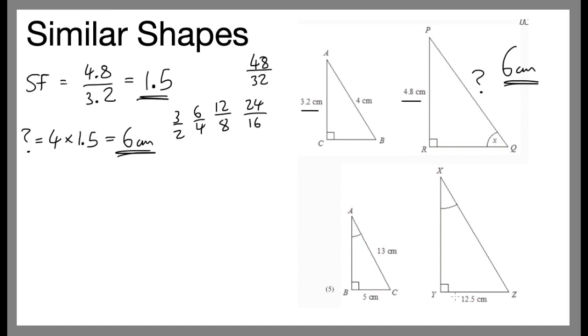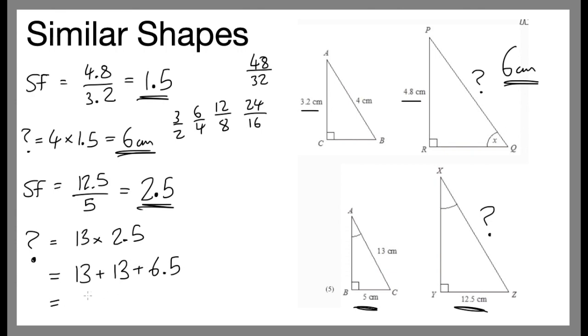OK, next one. Two shapes, again, similar. We want to find this question mark here. 12.5 and 5. So, the scale factor is 12.5 divided by 5. That gives me 2.5. So, the scale factor is 2.5. Our question mark, therefore, is going to be 13 multiplied by 2.5. OK, so if we double 13, so we have 13 plus 13 plus half of 13, which is 6.5. This gives me 26 plus 6.5, which is 32.5.